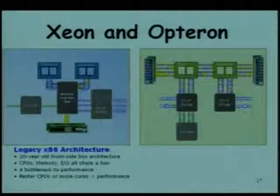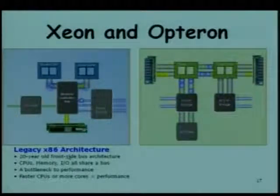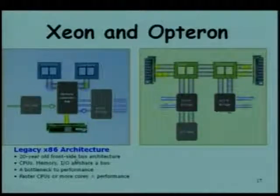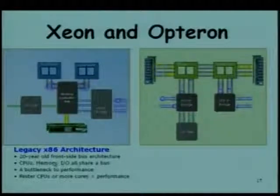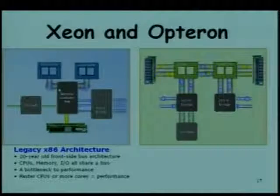This is the northbridge and there is a southbridge as well. Intel has been persisting with the x86 architecture due to compatibility. The front-side bus has been used in all Intel processors over the years. Essentially, all CPU, memory, and I/O traffic is on the FSB. So if your FSB is slow, even if you have a fast processor and fast memory, you will have slower overall performance.